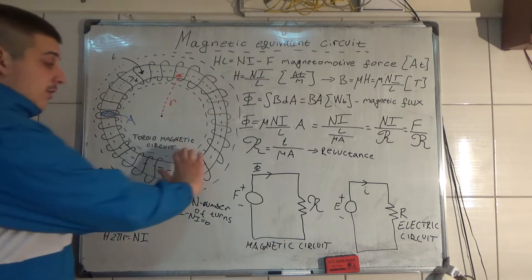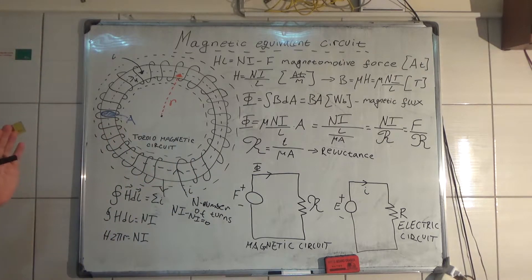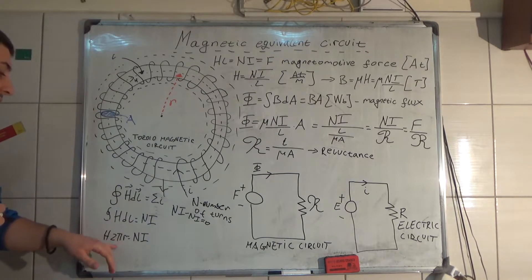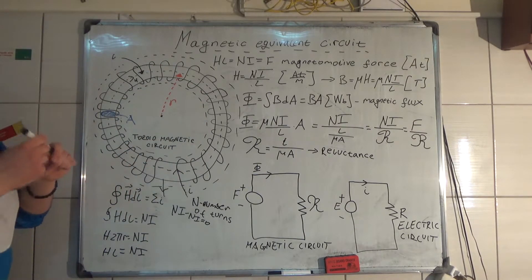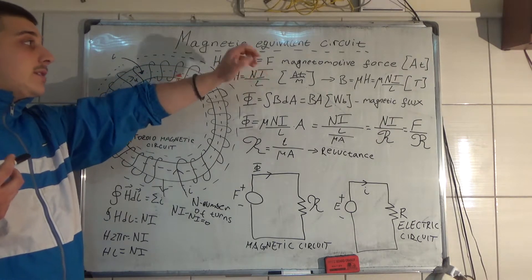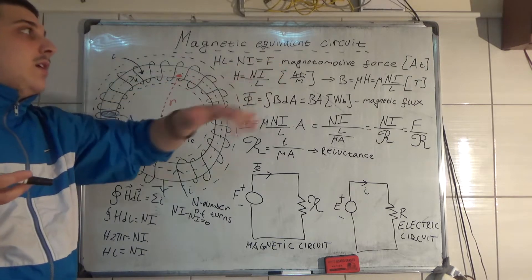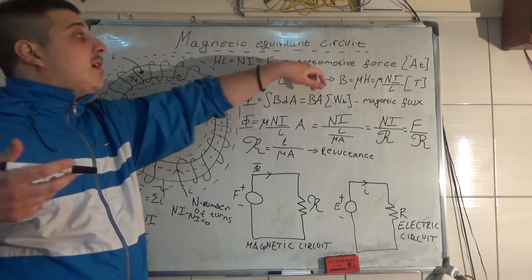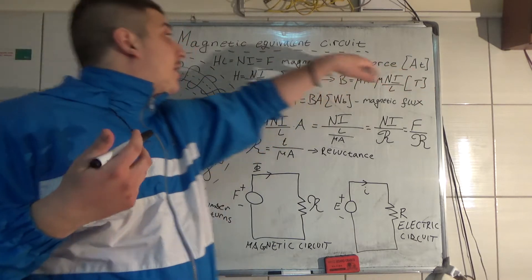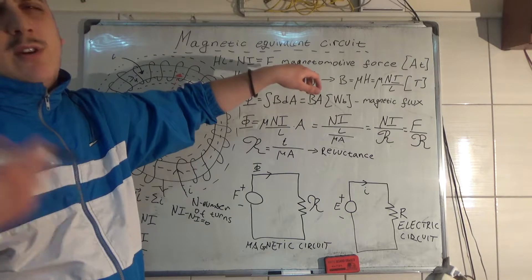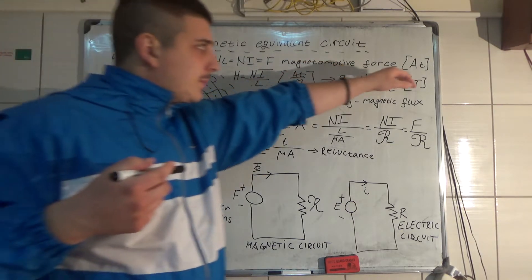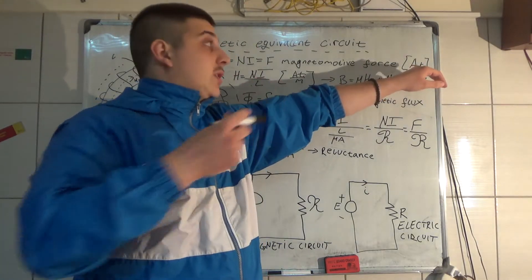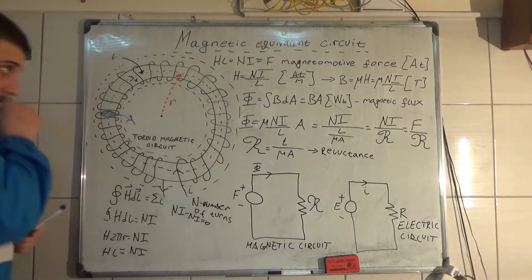We get that H·2πR equals NI. Since 2πR is the circumference, we can write HL equals NI, where L is the length of the core of the toroid. So HL equals NI, the number of ampere-turns. We define F equals NI as a new quantity called the magnetomotive force, or MMF — analogous to EMF in electric circuits. The unit of MMF is the Ampere-Turn.